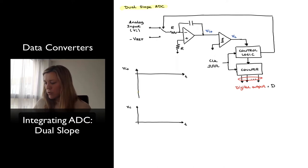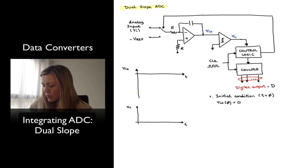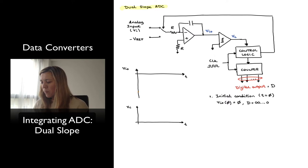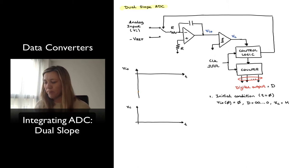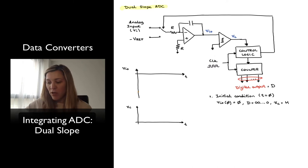Let's look at how this circuit works. We assume an initial condition at time equals zero: the output of the integrator Viout(0) is equal to zero, the integrator has been reset, the counter has been reset, and the digital output is binary zero. The output of the comparator we assume is logic high — whether high or low doesn't matter as much as keeping the logic consistent. What's important is that the comparator toggles at the right point. Under this initial condition, the switch is set to feed the analog input Vin to the integrator.